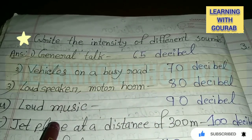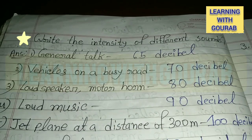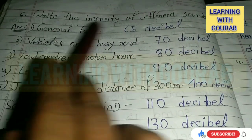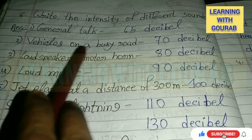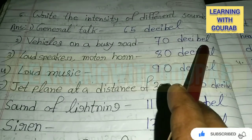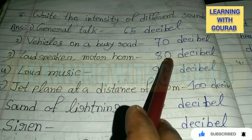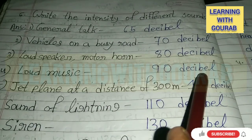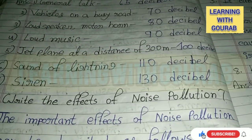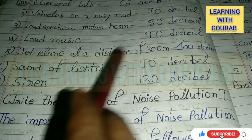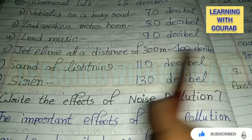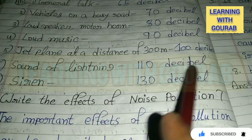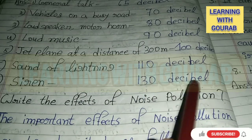Next question: Write the intensity of different sounds. Loud music: 90 decibels. Jet plane at a distance of 300 meters: 100 decibels. Sound of lightning: 110 decibels. Siren: 130 decibels.